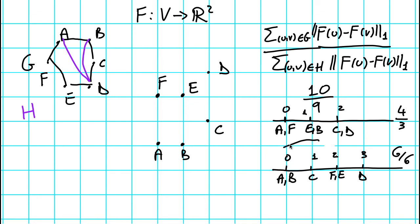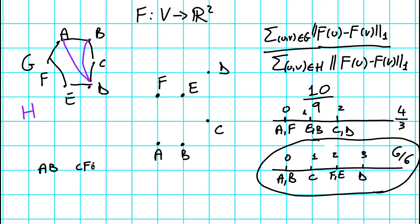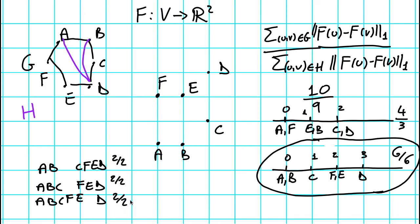We work with the one-dimensional mapping from the second coordinate to find an actual cut. The cuts considered are all those obtained by picking a threshold in this one-dimensional mapping: the cut with {A, B} vs. {C, F, E, D}, the cut with {A, B, C} vs. {F, E, D}, and the cut with {A, B, C, F, E} vs. {D}. Computing the unnormalized sparsity for each of those three cuts gives 2/2 for all of them. So each has sparsity at most 1, which is at most 10/9 — the ratio we started from.